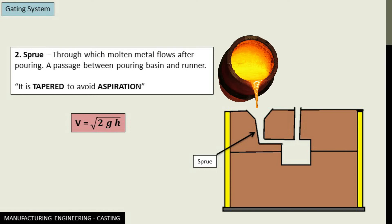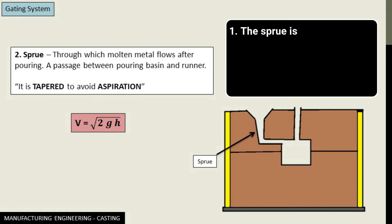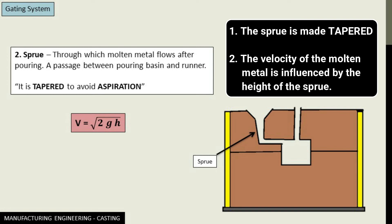And this height is what we take as h, and it's the height of sprue. That means the height of the sprue influences the velocity of the molten metal. So here two points are there: first, the sprue is tapered to avoid aspiration; second, the height of the sprue influences the velocity of the molten metal.